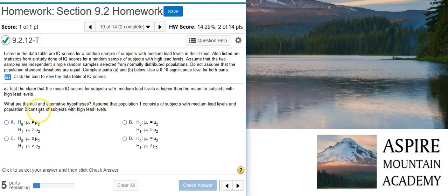The null hypothesis is going to be a statement of equality, which it always is by definition. So we're going to be looking at answer options B and D. And then to select the one with the proper alternative hypothesis, we look at this assumption that we were given here at the very end of our problem statement. Population 1 is the subjects with the medium lead levels and population 2 is the subjects with the high lead levels.